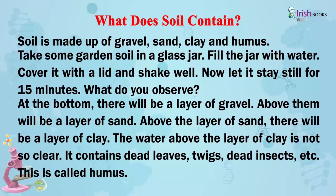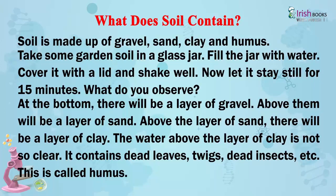Take some garden soil in a glass jar, fill the jar with water, cover it with a lid and shake well. Now let it stay for 15 minutes. What do you observe? At the bottom, there will be a layer of gravel. Above them will be a layer of sand. Above the layer of sand, there will be a layer of clay. The water above the layer of clay is not so clear — it contains dead leaves, twigs, dead insects, etc. This is called humus.